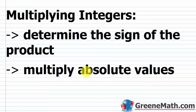Once you have the sign rules down, you're ready to multiply integers. If you can multiply whole numbers, you can work through these problems quickly. First, determine the sign of the product: same signs — positive times positive or negative times negative — gives a positive product. Different signs — negative times positive or positive times negative — gives a negative product. Then just multiply the absolute values.